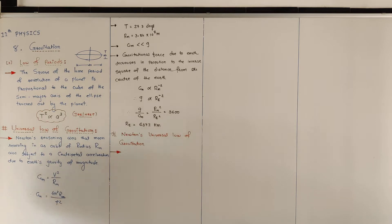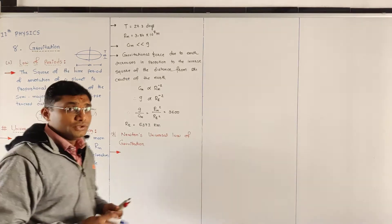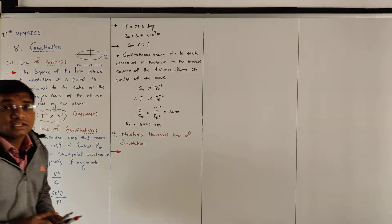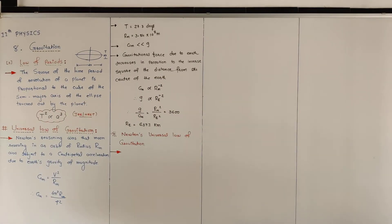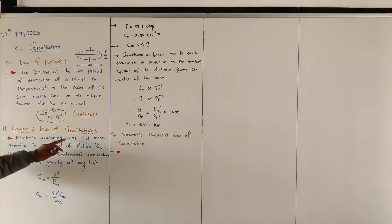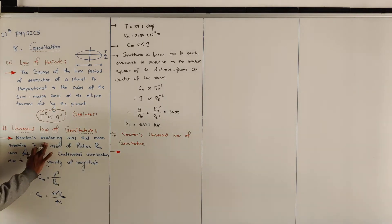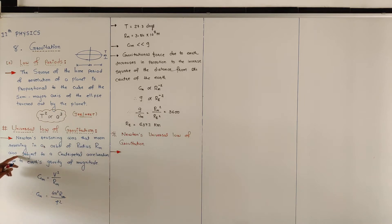The Universal Law of Gravitation was given by Newton. What was Newton's first invention that led him to the law of universal gravitation? Newton's reasoning was that the Moon, revolving in an orbit of radius r_m, was subject to a centripetal acceleration due to Earth's gravity of a certain magnitude.